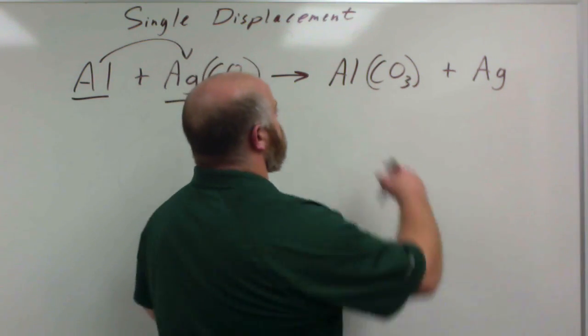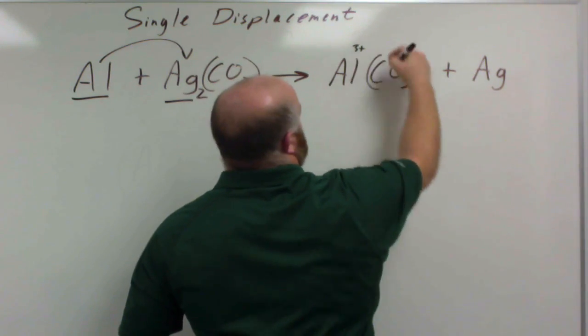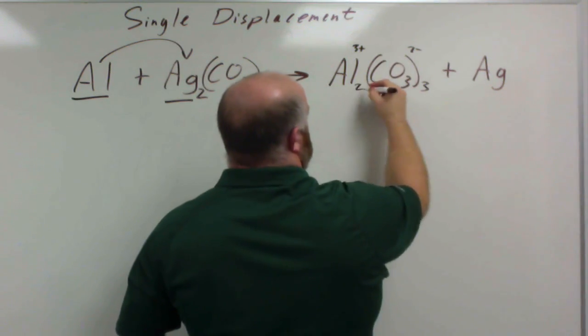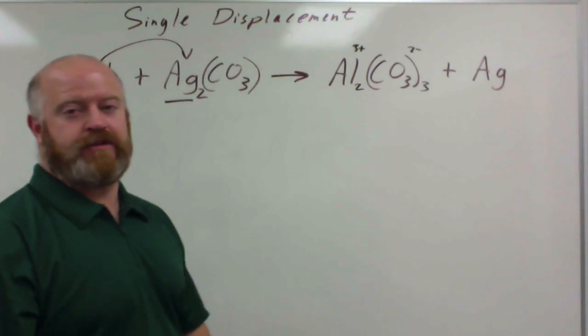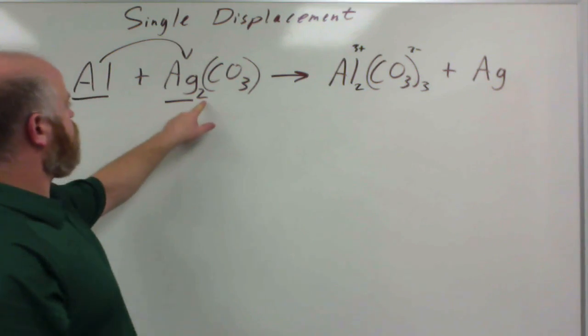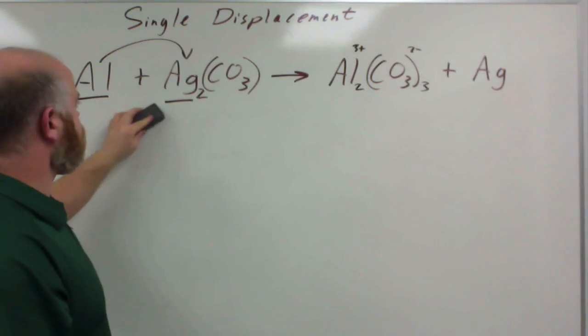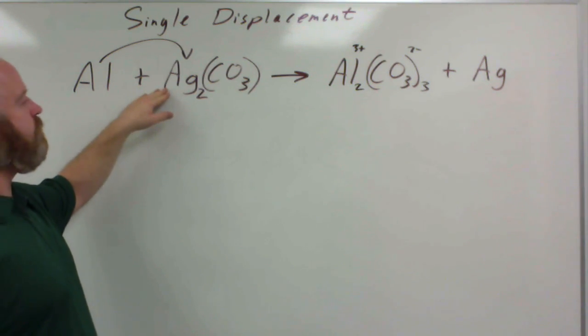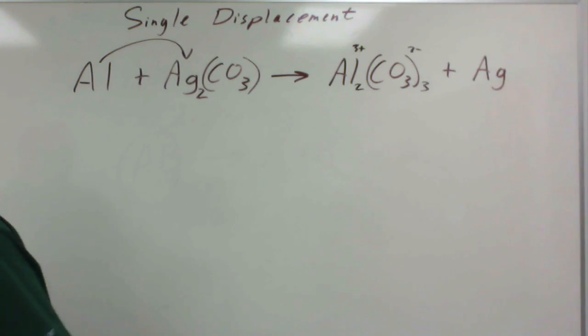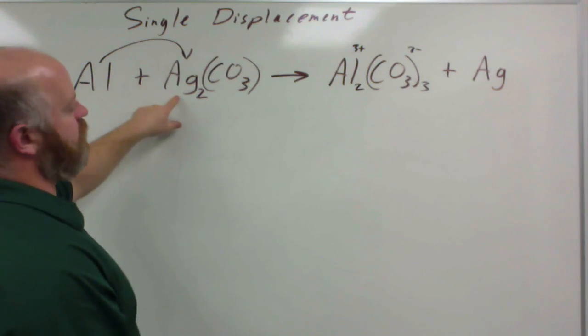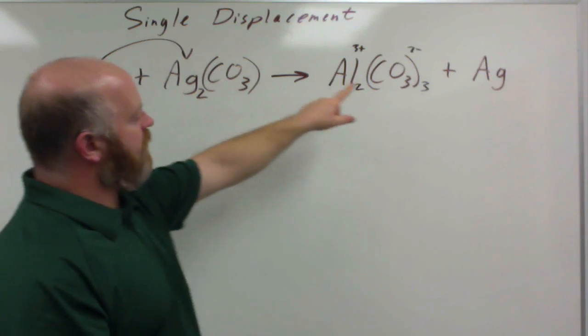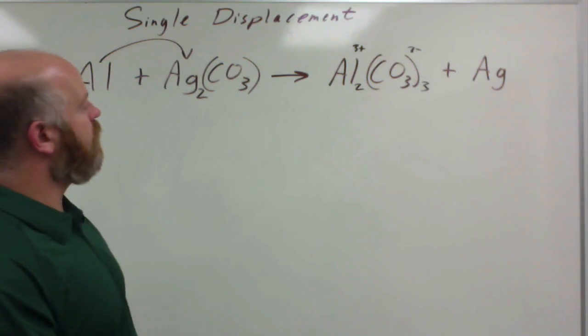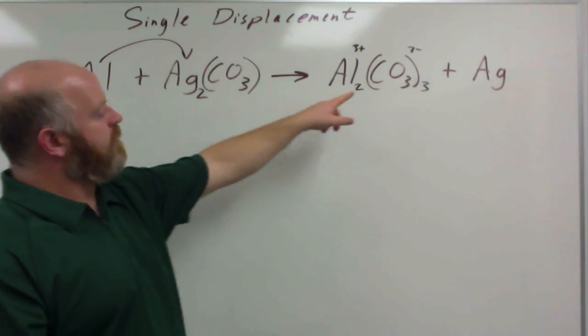Aluminum carbonate, this is not done yet, so aluminum is a 3+, carbonate is a 2-, so I need to have 3 carbonates and I need to have 2 aluminums there. This is correct, this is correct. So now we have our skeleton equation. If we take a look, I have 1 silver, I have 2 silvers, I have 1 carbonate, I have 3 carbonates, I have 2 aluminums, I have 1 aluminum.